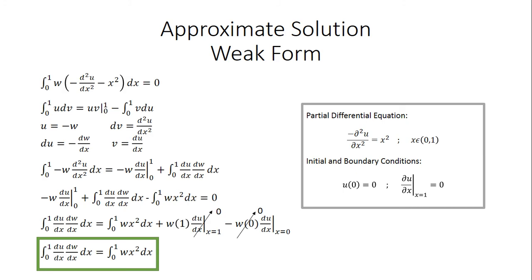Now we are going to determine the approximate solutions. To do this we need the weak form of our PDE. To determine the weak form, we set our PDE equal to 0 by moving x squared to the same side as the second partial derivative. We then take the integral and multiply by the weight function w, integrating from 0 to 1. We need to integrate by parts the term involving w times the negative second partial derivative of u with respect to x.